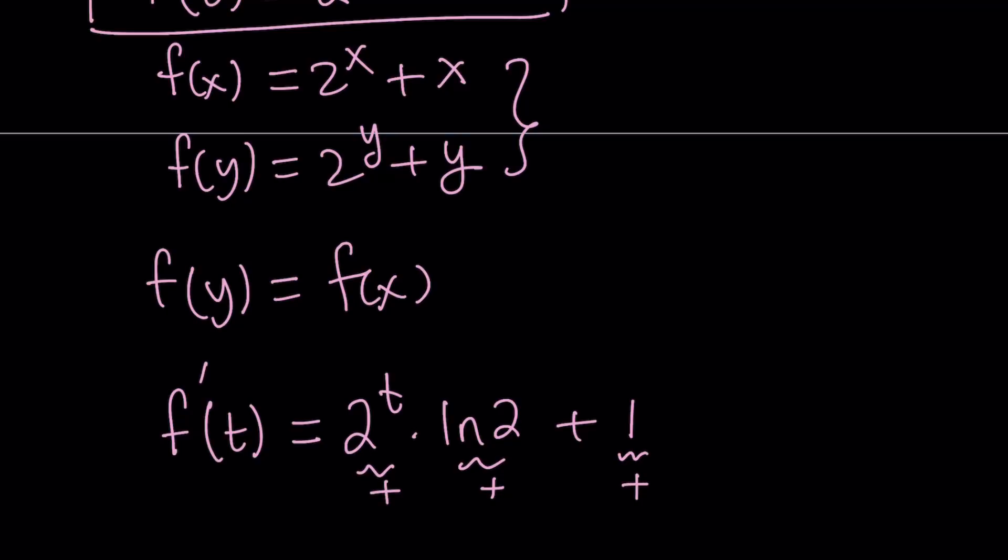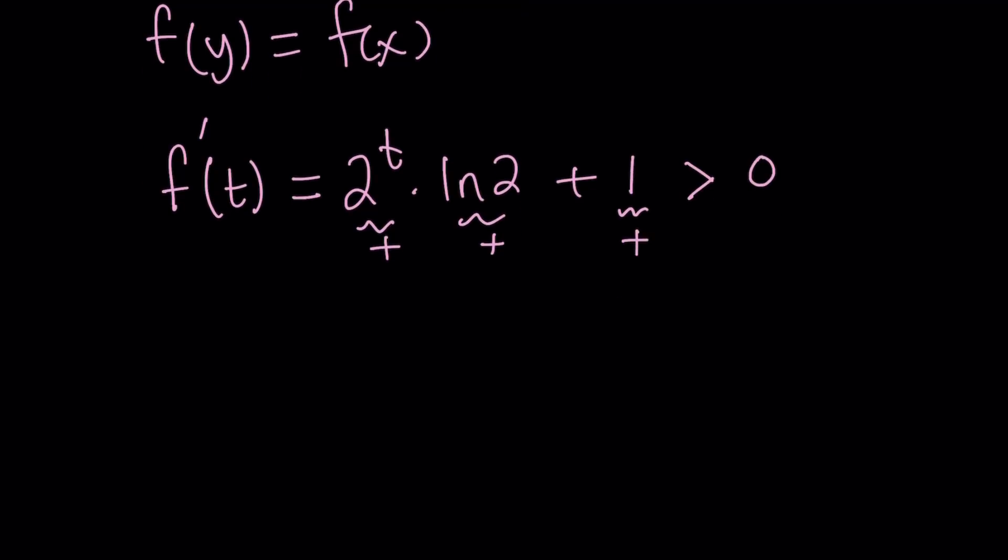We have the situation where f prime of t is greater than 0 for all values of t. Great. So we have the derivative which is positive. What is that supposed to mean? As you know, with functions, it means that f is increasing. But since this is true for all values of t, f is always increasing. Great.